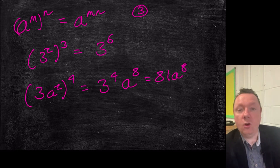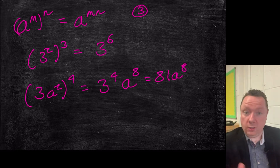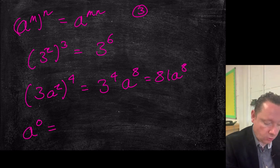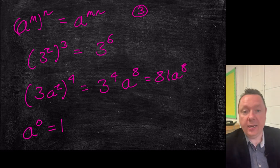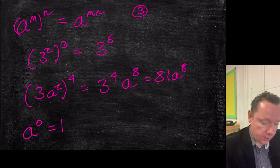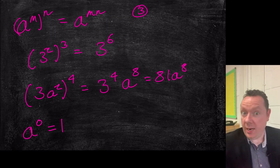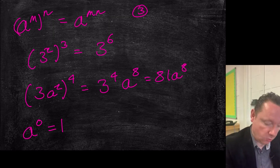And then law four: anything to the power of zero is equal to one. Anything to the power of zero is one. Five to the power of zero is one. Seven to the power of zero is one. Bananas to the power of zero is one. Anything at all to the power of zero is one. So that's law four.